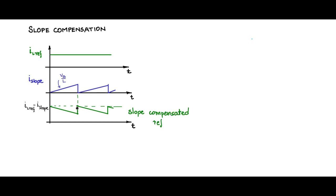This will be the new current reference that we need to use for doing the current control. The inductor current should be compared with this slope compensated current reference. Now, how do we get this wave shape where the slope is the same as vb/L — that is, the down slope of the inductor current waveform?